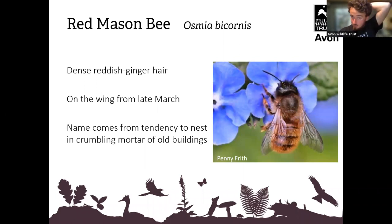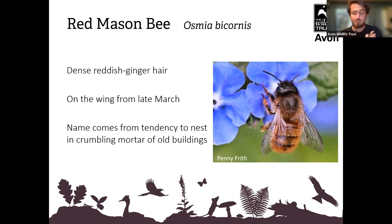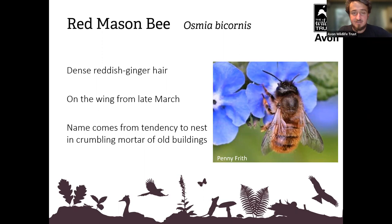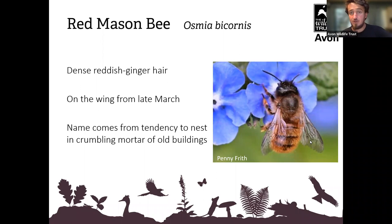This is the red mason bee — reddish ginger, but not big and fluffy like the common carder bee. It's got quite dense, much shorter hairs. They're on the wing from late March right now. Their name comes from a tendency to nest in old buildings that are falling apart — a little nod to the need for untidiness. They're quite reddish-brown in color. This is the one we mentioned who can pollinate the equivalent of 120 honeybees — not bad going at all.